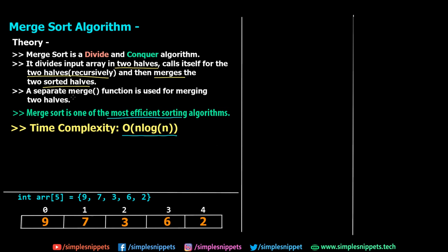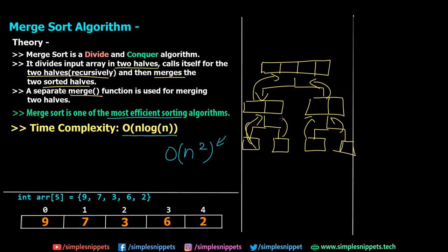There is a separate merge function used for merging the two halves. When merging the smaller sub-arrays back together, we cross-check which element is smaller and place it appropriately. For example, with elements 9 and 7: since 7 is smaller than 9, when merging, 7 comes first and 9 comes second. That logic is written in the merge function. If you're making notes, note down the time complexity — these are important theory points.